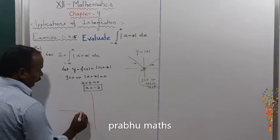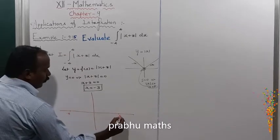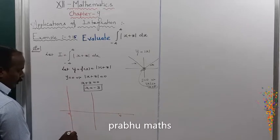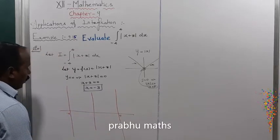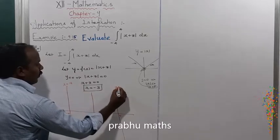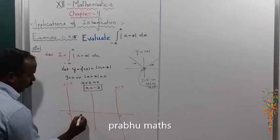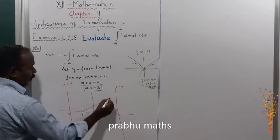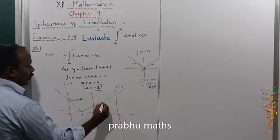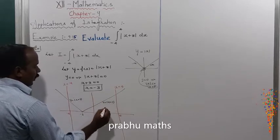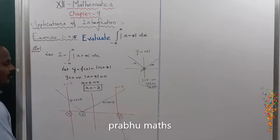Now let us look at the graph sheet. The limits are minus 4 to plus 4. So x equal to minus 4 and x equal to plus 4 are the bounds. At x equal to minus 3, the right side is fully plus and left side fully minus, giving y equal to x plus 3. So the limits split into minus 4 to minus 3 and minus 3 to plus 4.